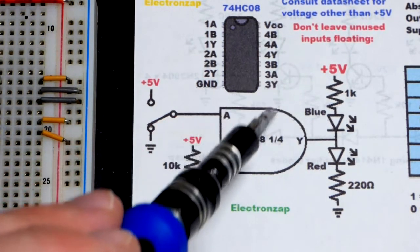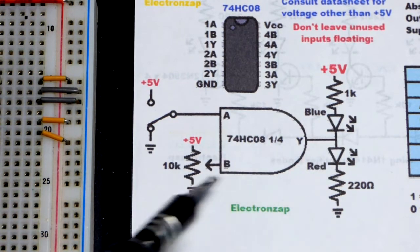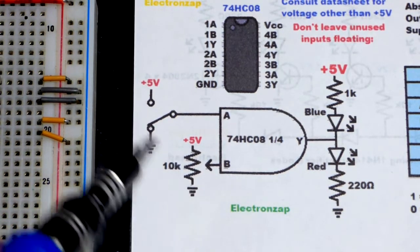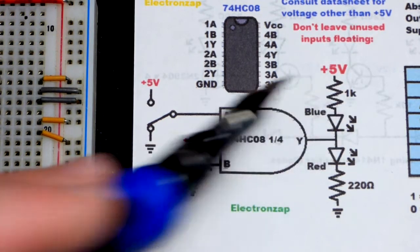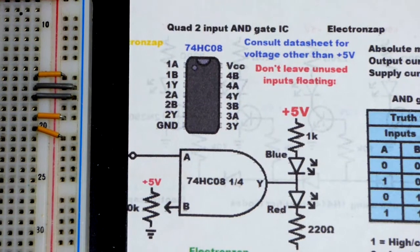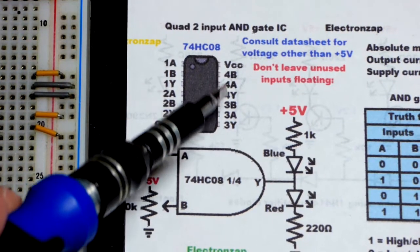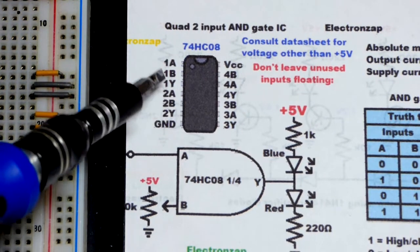So we already looked at how the output works. Both of these inputs have to be high for the output to be high, as close to five volts as it can get. If one or the other is low or both of them low, then the output is going to be low, connected to ground as good as it can get.